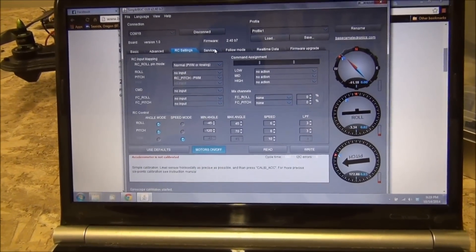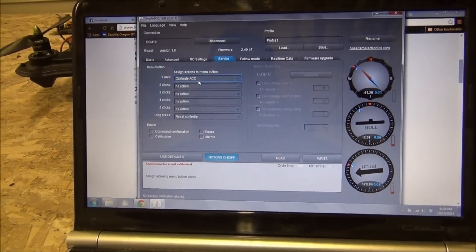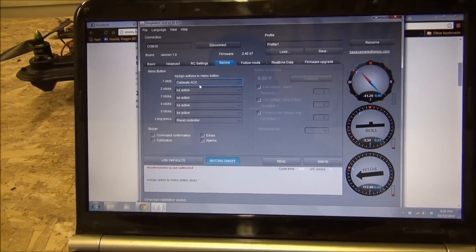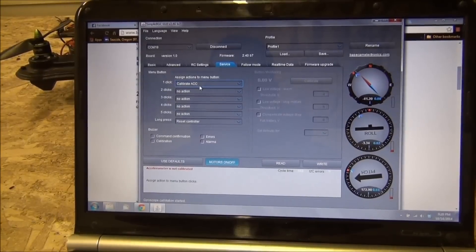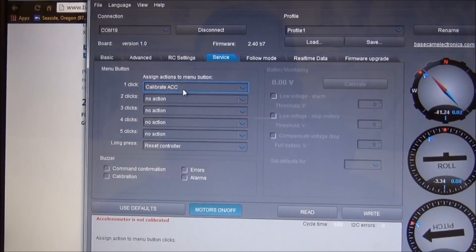The next tab is our service tab. What we can do here is there's a little tiny button on the flight controller. And when you press that, you can have it perform different actions. By default, it's set to calibrate the accelerometer.